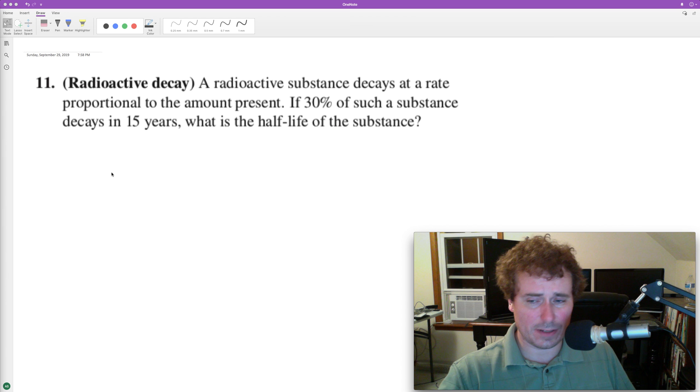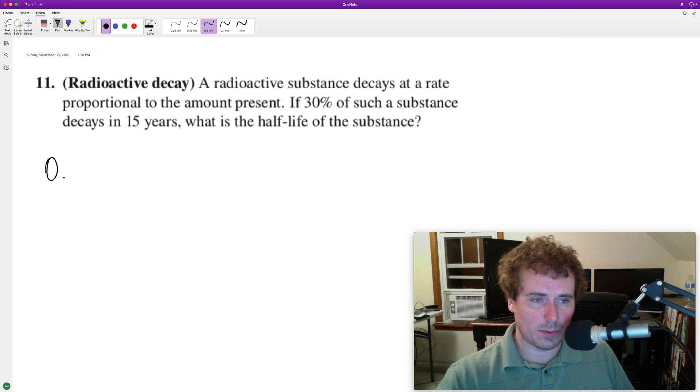30% decay means we'll have 0.7 or 70 percent remaining. We don't need to put the one there, but I'll put it there just to represent that. And this is decaying at a constant rate, and this is after 15 years, that's our t, our time.